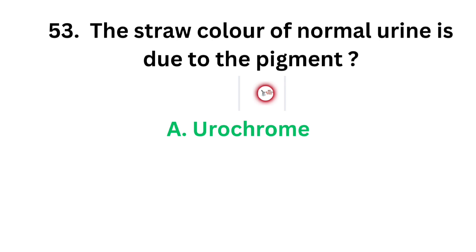The correct answer: the straw color of normal urine is due to the pigment Urochrome.